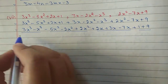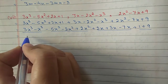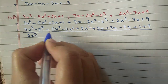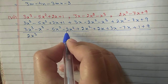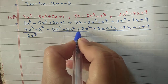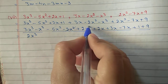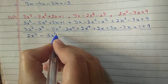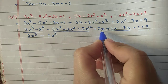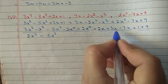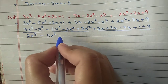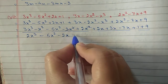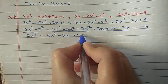Simplifying: 3 minus 1 gives 2x cube; minus 5x square, with minus 2 plus 2 cancelling, leaves minus 5x square; 2x plus 3x is 5x, 5 minus 7 gives minus 2x; 1 plus 9 is 10. Answer: 2x cube minus 5x square minus 2x plus 10.